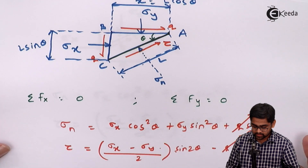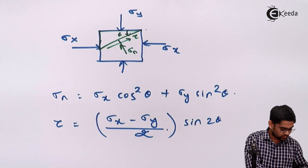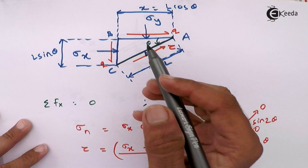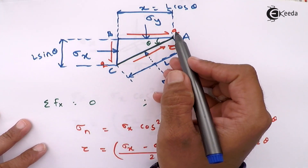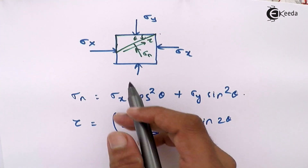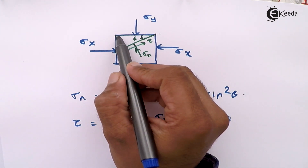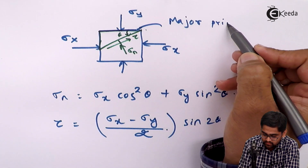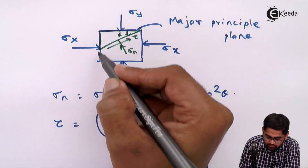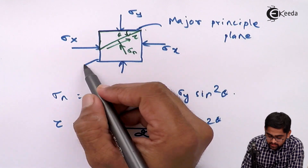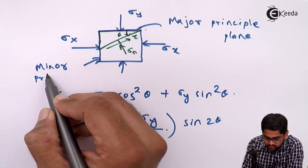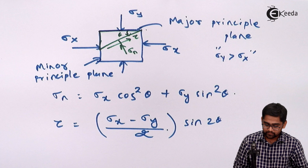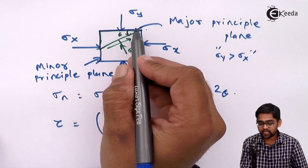If the shear stress q acts on both x and y planes, but a particular inclined plane has no shear stress, we call that the major principal plane. The perpendicular plane is the minor principal plane. Depending on the values of sigma x and sigma y — assuming sigma y is greater — the plane carrying sigma y becomes the major principal plane and the other becomes the minor principal plane, because these planes are free of shear stress.